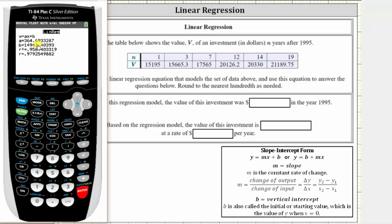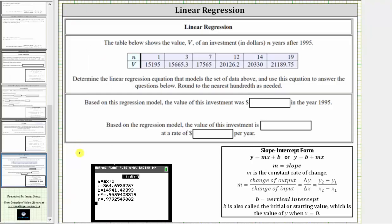And we are not using the variables of x and y. We're using n and V. So our regression equation is V equals 364.69 times n plus 14,941.40.